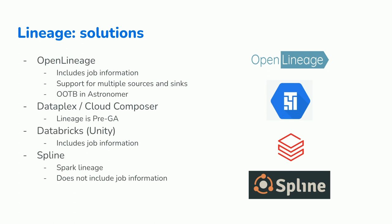There are good options for lineage. OpenLineage is by far the standard — it supports multiple sources and sinks. It's out of the box in Astronomer. Cloud Composer now has lineage in pre-GA. For those in Databricks using the Unity Catalog, you also get lineage, but you need to be on the Unity Catalog. And a more low-level option for those running Spark in EMR or similar, there's Spline, which you install in the cluster and it emits lineage based on the query plans in Spark.